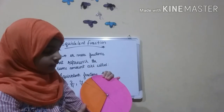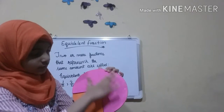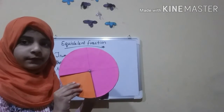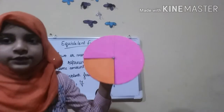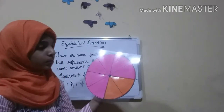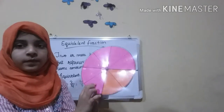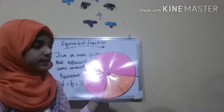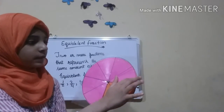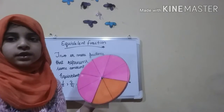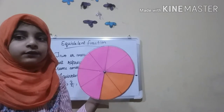Now let me show you the equivalent fractions of 3 by 4. I will rotate the fraction wheel again. The part represented by pink is 3, and the total number of parts is 4, so 3 by 4 of the parts is covered with pink. Now let me put the transparent sheet on it. We can see that 6 by 8 of the portion is shaded — the pink portion is 6 and the total is 8. But the amount represented by pink has not changed. So 3 by 4 and 6 by 8 are equivalent fractions.